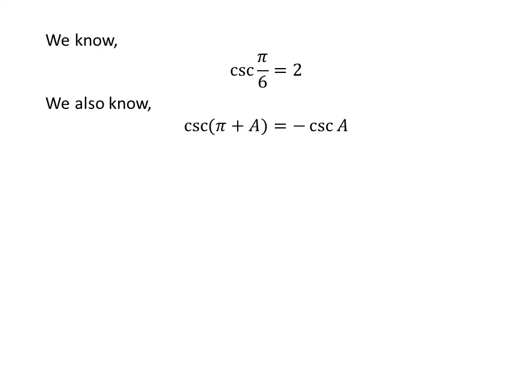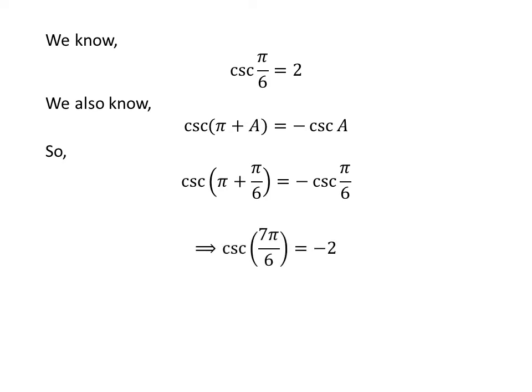We know the trigonometric identity: cosec(π + a) is equal to minus cosec(a). Applying this identity, cosec(π + π/6) is equal to minus cosec(π/6). Since π + π/6 equals 7π/6, and plugging in the value of cosec(π/6), we get cosec(7π/6) is equal to minus 2.